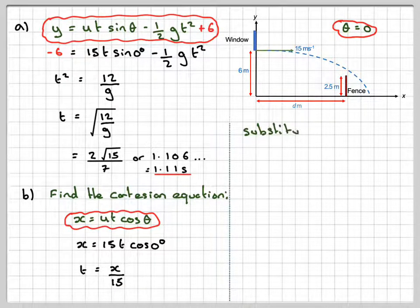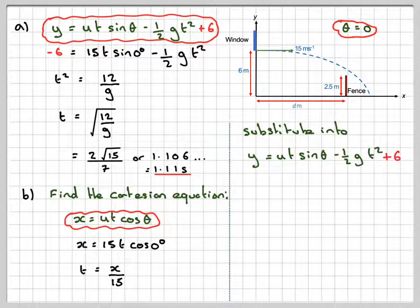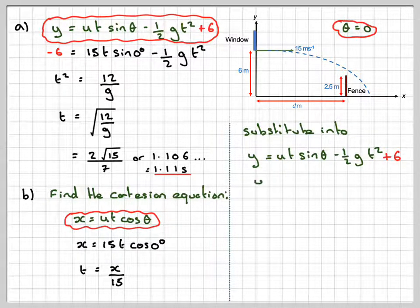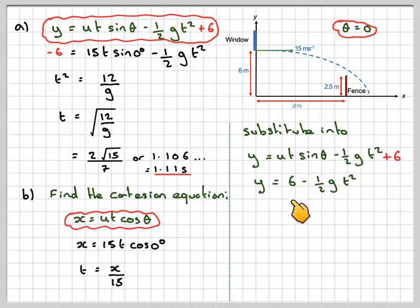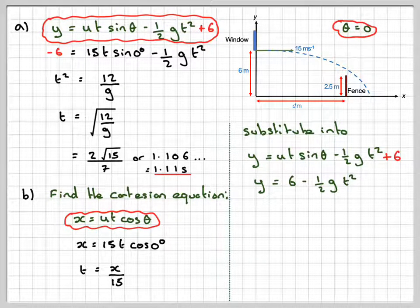We now substitute that into ut sine theta minus 1.5 g t squared plus 6. But we know that sine theta is 0 so y will just become equal to 6 minus 1.5 g t squared. This bit will be 0 and we just put the 6 at the front.